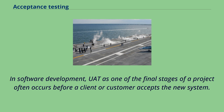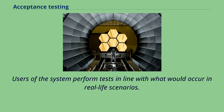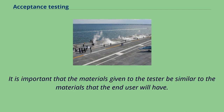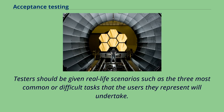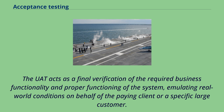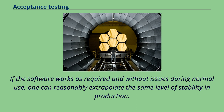Users of the system perform tests in line with what would occur in real-life scenarios. It is important that the materials given to the tester be similar to the materials that the end-user will have. Testers should be given real-life scenarios such as the three most common or difficult tasks that the users they represent will undertake. UAT is a final verification of the required business functionality and proper functioning of the system, emulating real-world conditions on behalf of the paying client or a specific large customer. If the software works as required and without issues during normal use, one can reasonably extrapolate the same level of stability in production.